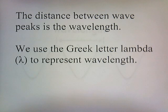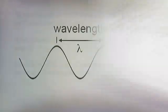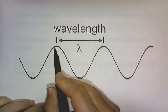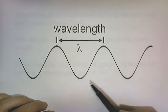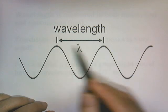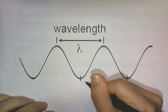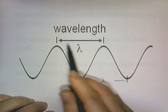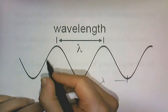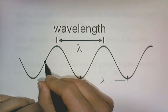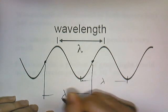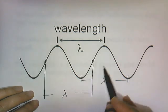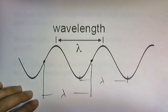The distance between wave peaks is the wavelength, and we use the Greek letter lambda to represent wavelength. Here's our wave — the distance between the peaks is the wavelength. Wavelength is the distance between corresponding points on a wave, so it could be the distance between peaks or between troughs — you'll get the same number. As long as you pick corresponding points, you'll get the same wavelength.